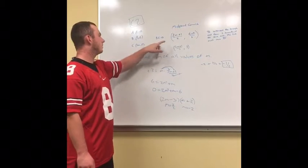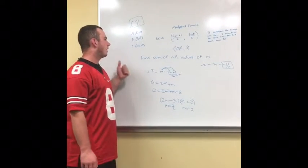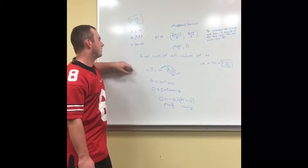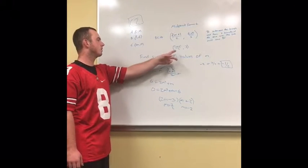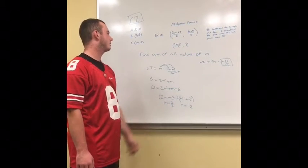So, you use the midpoint formula of (x2 plus x1) divided by 2, (y2 plus y1) divided by 2, and you get (2M plus 1) divided by 2 and 3 as your result.